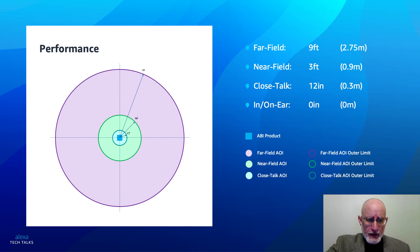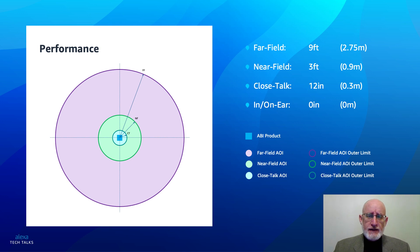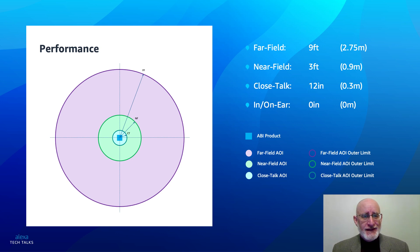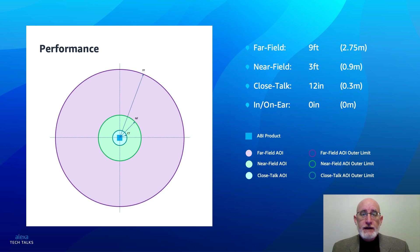When we talk about a far-field product, we're talking about a product that has a radius of interaction of nine feet. A near-field product has a radius of interaction of three feet, close-talk is 12 inches. As you can see in the illustration, it's depicted as a circle, but we understand that some products will be up against a wall. So consider the half of the circle on the wall side to not be part of the expected use area. In general terms, we refer to the area of interaction as that circular area determined by the performance level of the microphone array: far-field, near-field, close-talk, or in and on the ear.